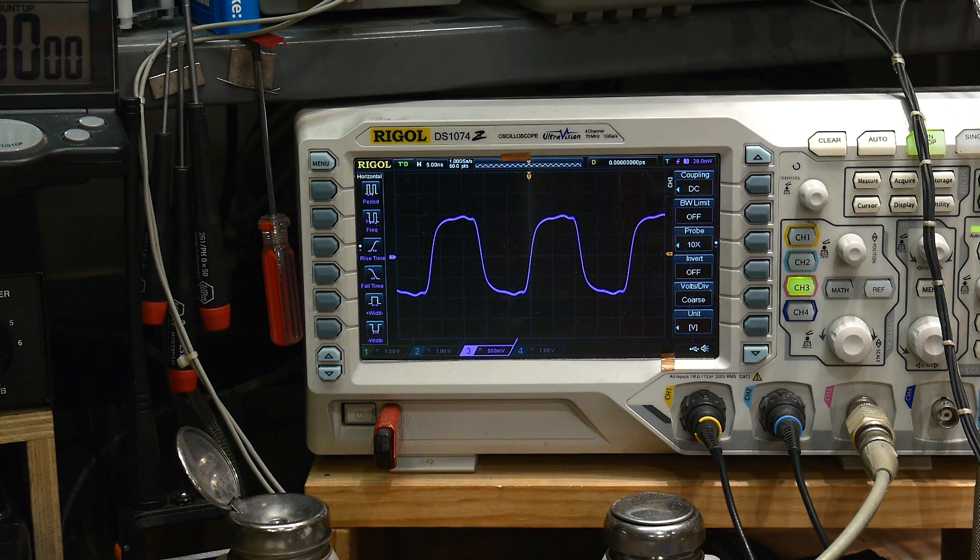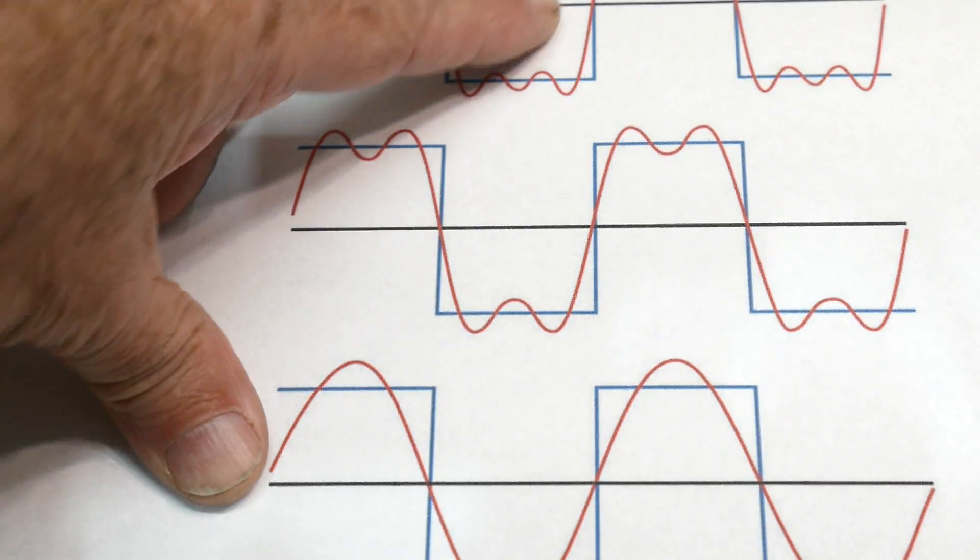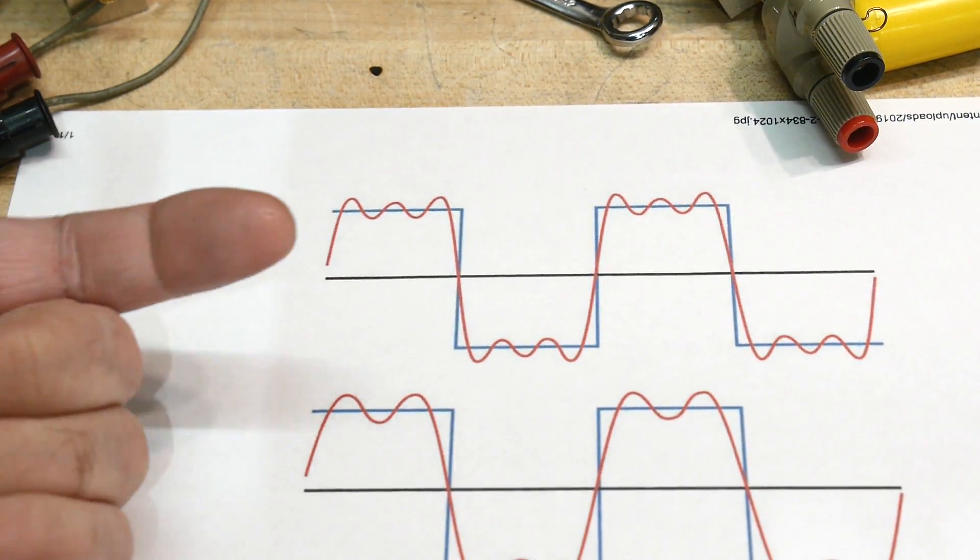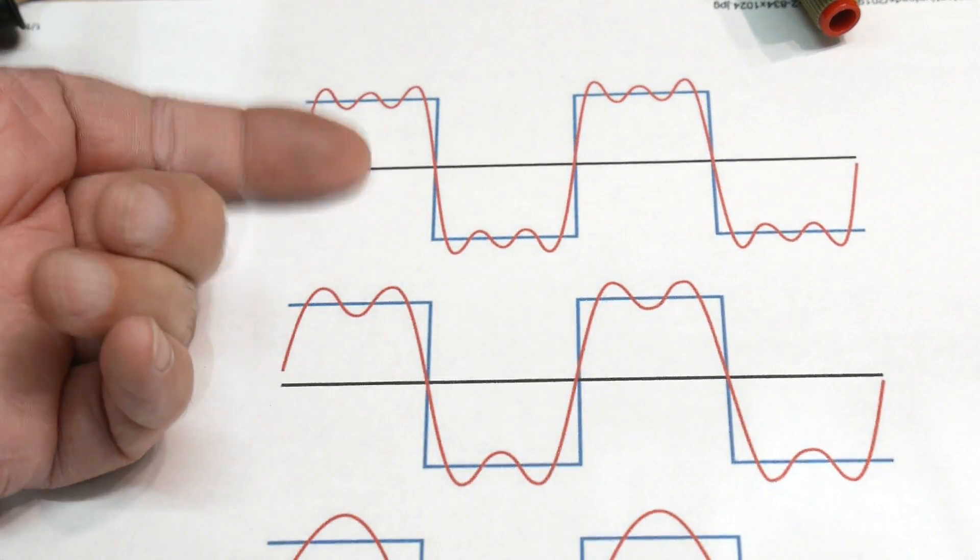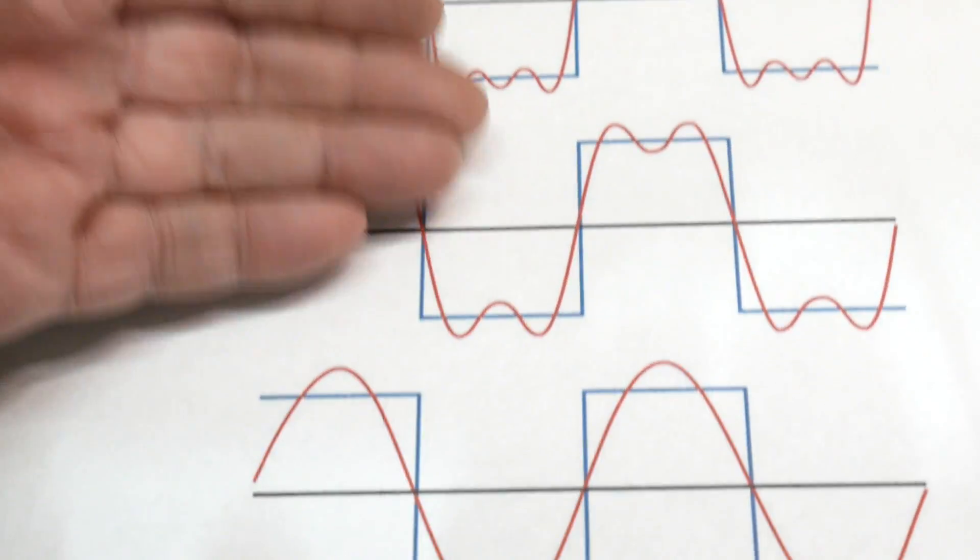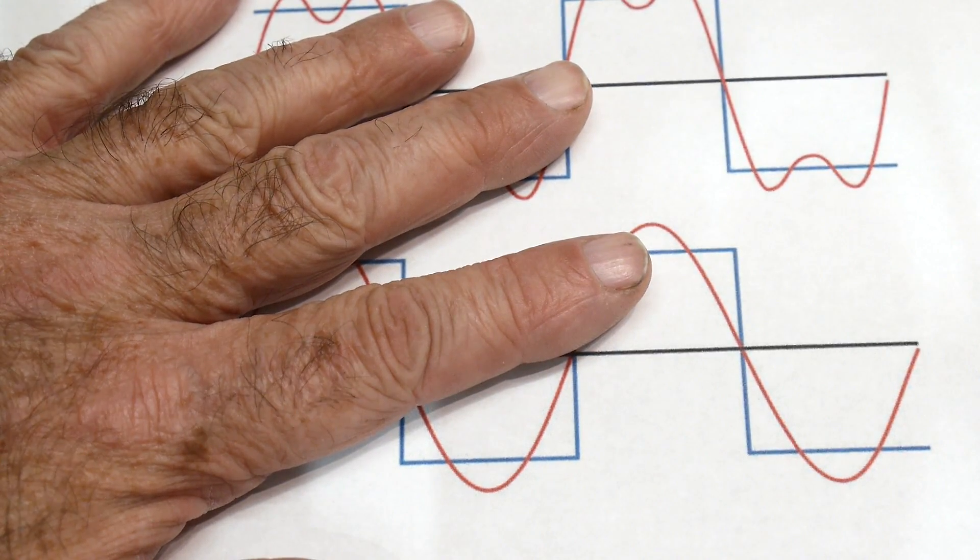So let's say that you understand this theory. What if you go backwards? What if you have a square wave, and you start removing harmonics? You remove that one, and you remove that one. What if you removed all the harmonics except for the first one, would you end up with a sine wave? Well, let's do that.